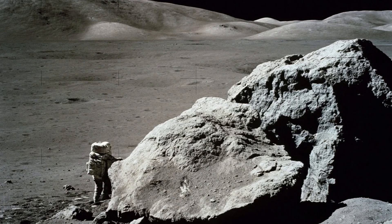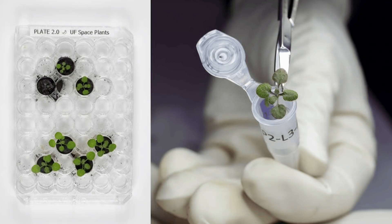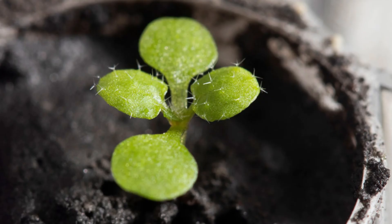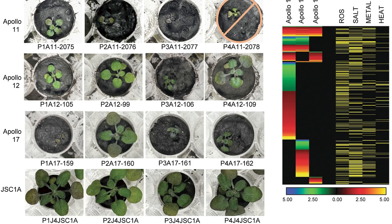Researchers at the University of Florida obtained actual moon soil from the Apollo missions and grew Arabidopsis plants in it for a few days. What they found was that plants grown in moon soil, compared to Earth soil, showed signs of stress and didn't grow as well, but they did germinate and grow — which is hopeful. Think of it like growing plants in a problematic soil with some contamination or nutrient imbalance; something similar seems to be happening with lunar regolith.